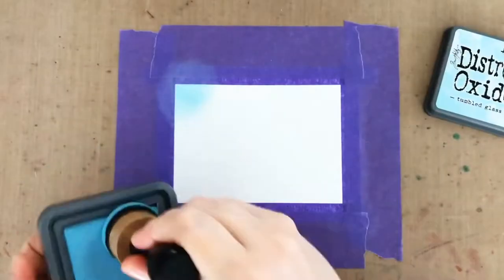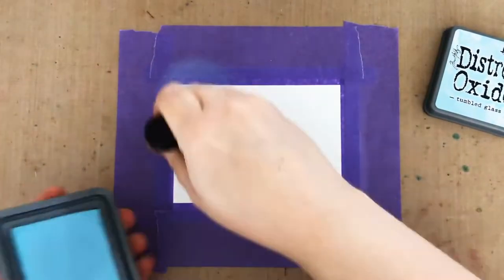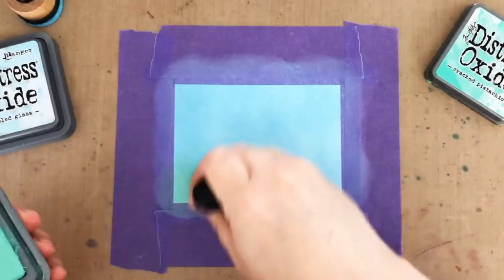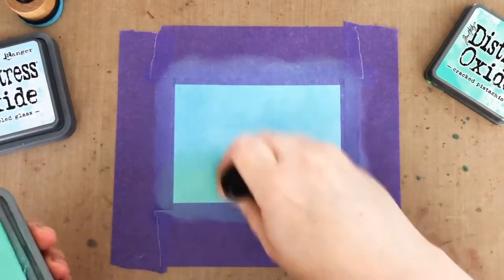I'm also going to use even more tape to tack the card down to make it easier to ink blend. Then I'm going to add a little color by blending Distress Oxide Tumbled Glass and Cracked Pistachio, kind of overlapping in the middle.